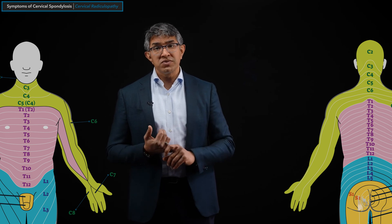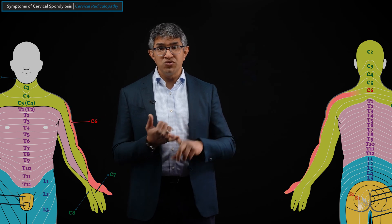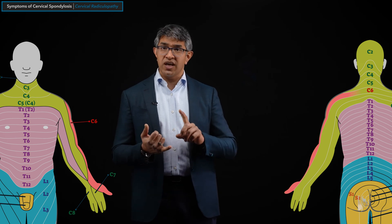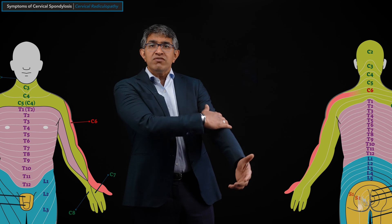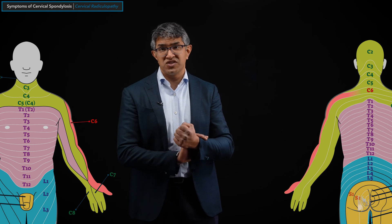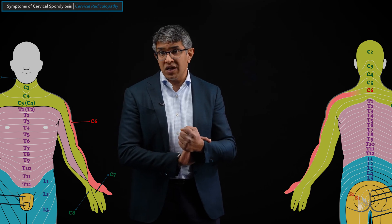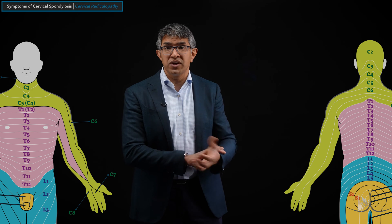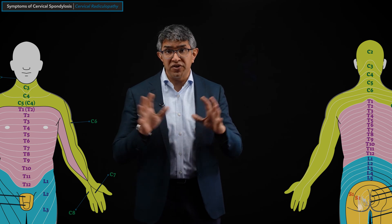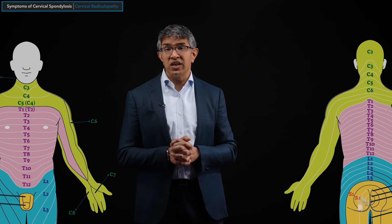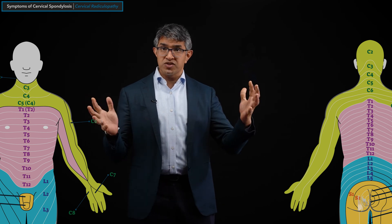When people develop symptoms of a C6 radiculopathy — typically from the C5-6 disc — the pain, weakness, numbness, and tingling usually travel down the arm and classically into the forearm, down to the thumb and index finger. Those are the classic distributions for C6 radiculopathy. In terms of weakness, people can have difficulty with bicep weakness, wrist extension, and sometimes pronator function. Doctors will look at these specific muscle groups when evaluating for C6 radiculopathy.